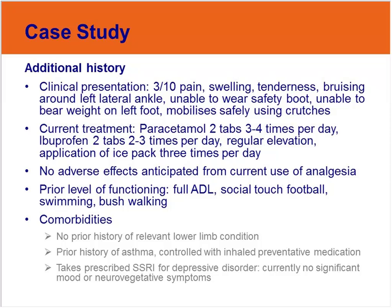Prior to the injury, Alex was very physically active, participating in full activities of daily living, regular social tasks, touch football, swimming and bushwalking. In regards to comorbidities, Alex does not have any prior history of a relevant lower limb condition. Alex has a prior history of asthma which is controlled with inhaled preventative medication and is not currently symptomatic. Alex is also taking a prescribed SSRI medication for a depressive disorder and is currently not experiencing any significant mood or neurovegetative symptoms.